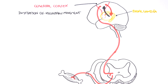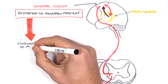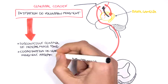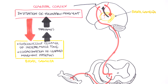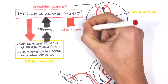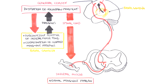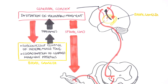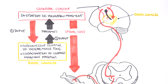The cerebral cortex wants to initiate a voluntary movement and sends signals to the basal ganglia. The basal ganglia helps in the subconscious control of skeletal muscle tone and the coordination of learned movement patterns. This information is sent back to the cerebral cortex through a loop — via the thalamus first, then to the cortex — which then sends smooth, controlled movement signals down the spinal cord to the skeletal muscle. In Parkinson's disease, there is a problem in the output from the basal ganglia, so we do not have a normal controlled movement pattern.